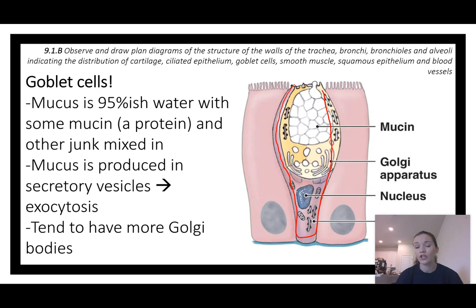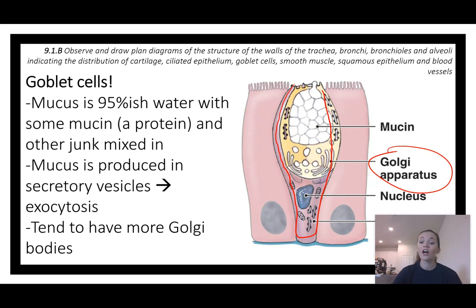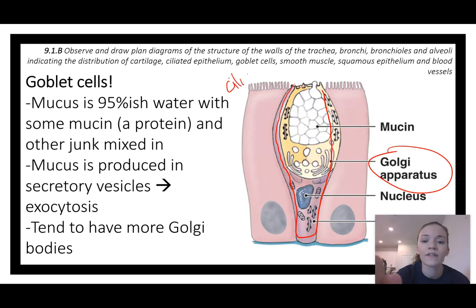Mucus is mostly water and some mucin — a slimy protein. Goblet cells require lots of Golgi apparatus and lots of exocytosis, which is an active process requiring mitochondria. They're scattered throughout the ciliated cells every so often to keep everything slimy.